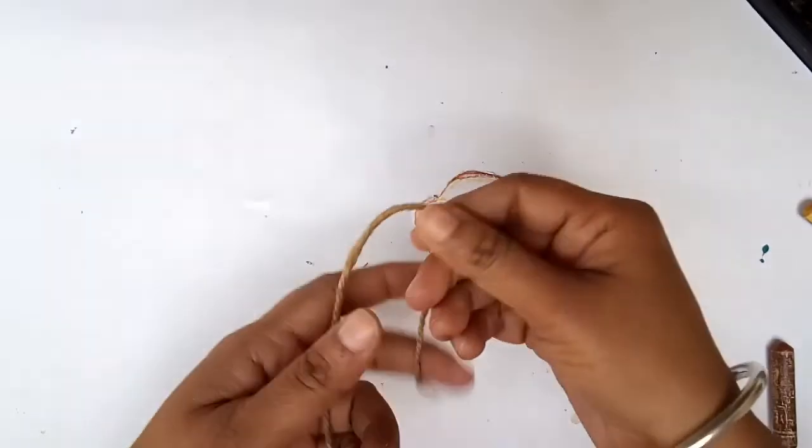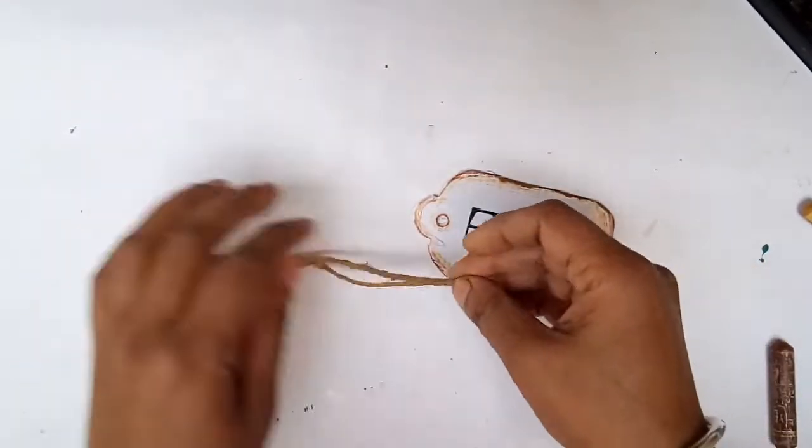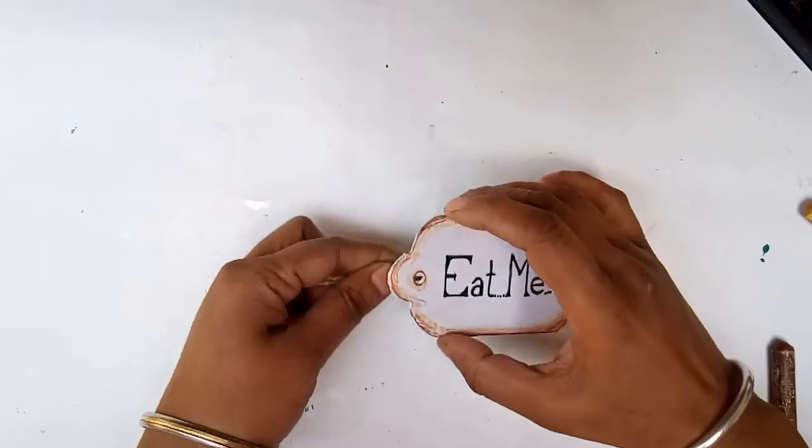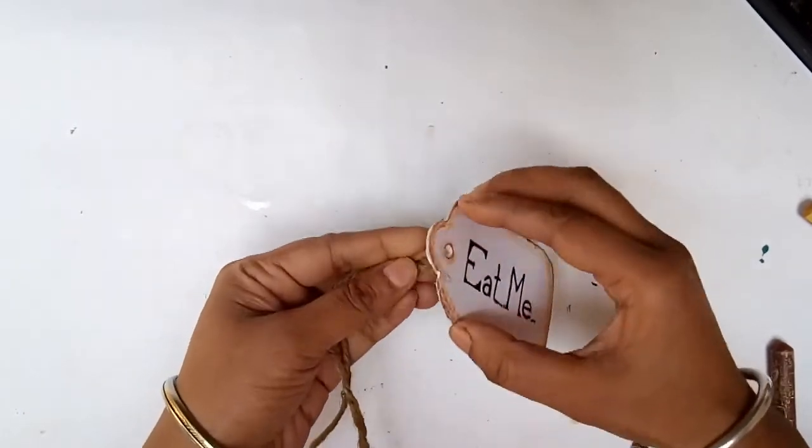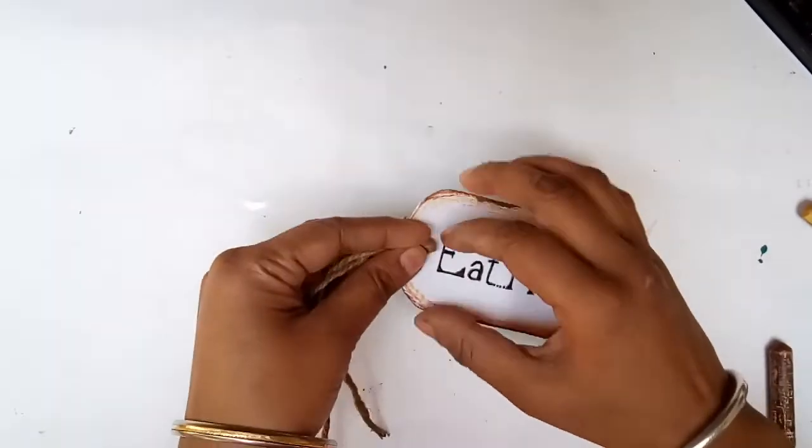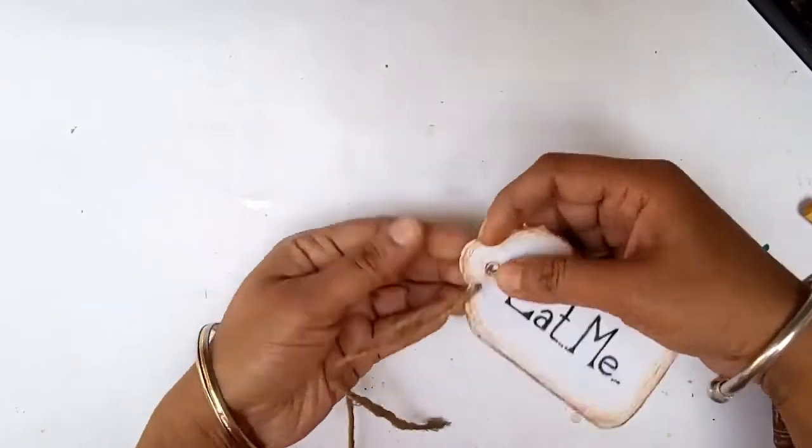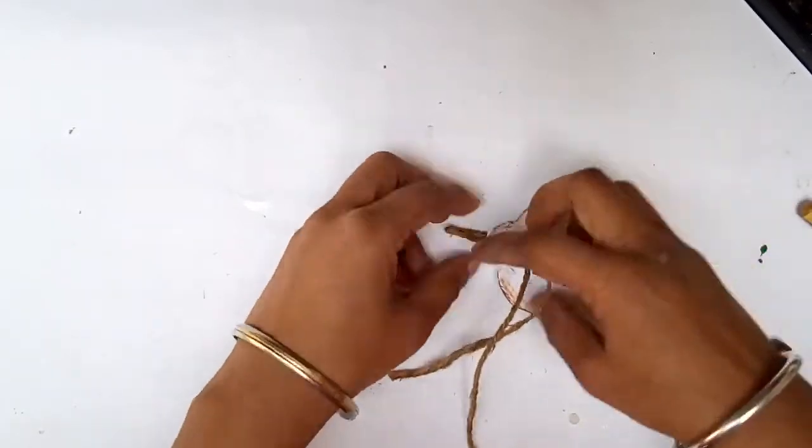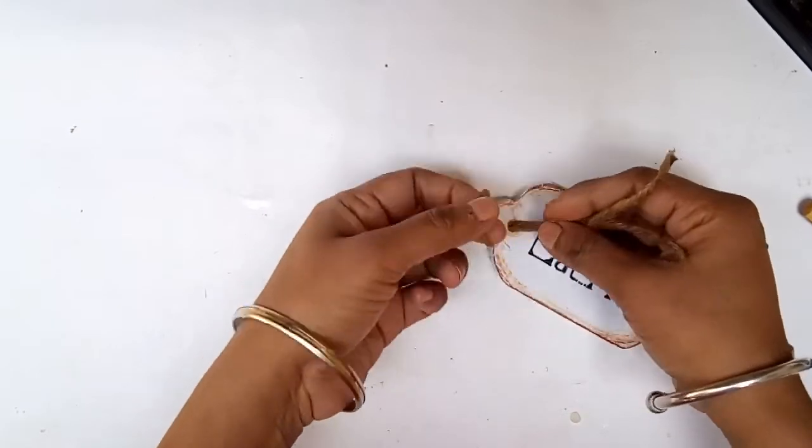For the final touch I am just taking a little jute twine and wringing it through this and making a simple loop.